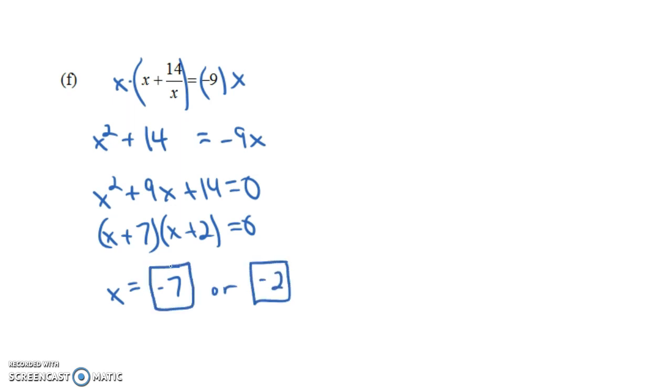And if you went and plugged those into the original equation, let's try, for example, negative 7. If you plug in negative 7, you get negative 7 plus 14 over negative 7 equals negative 9. Is that true? Well, this is negative 7. It's really minus 2, right? That's 14 over minus 7 is minus 2. And does that equal negative 9?